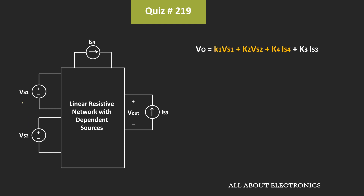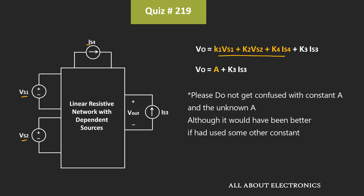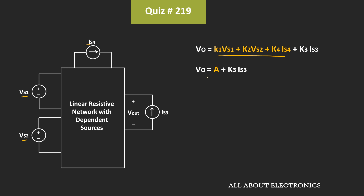Now, since VS1, VS2, and IS4 are fixed values, those three terms are constant. So we can say the output voltage Vout = A + K3·IS3, where A is a constant. This means as the value of IS3 changes, the output voltage Vout will change accordingly. This is the general expression for the output voltage.